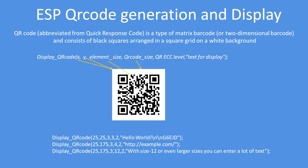To display a QR code you call that function shown in the center, with an XY coordinate, an element size (typically one or two pixels), a Quick Response code version size (typically 1 through to 40), and an error correction level — depending on whether you want it to be resilient to damage — from 0 through to 3. Then the text will display.